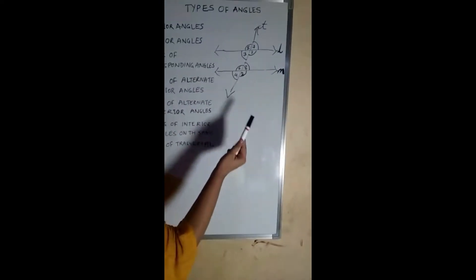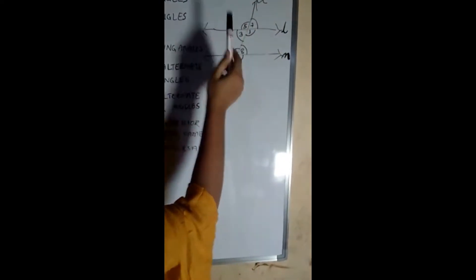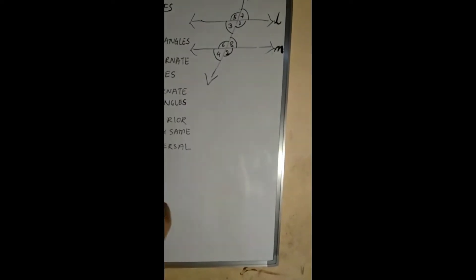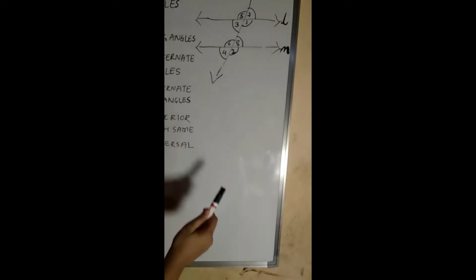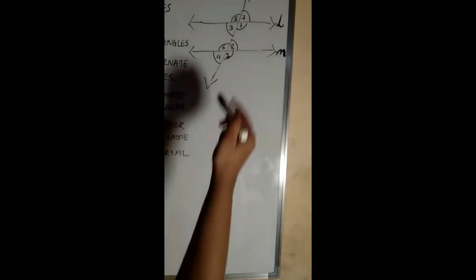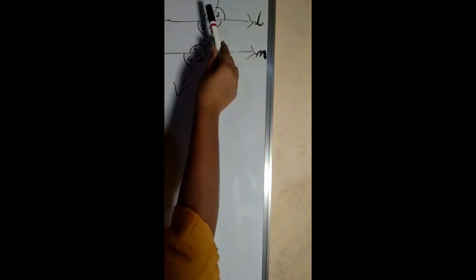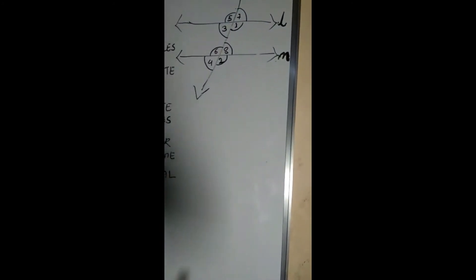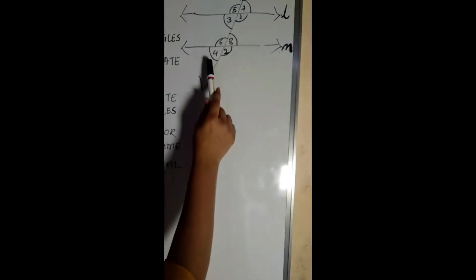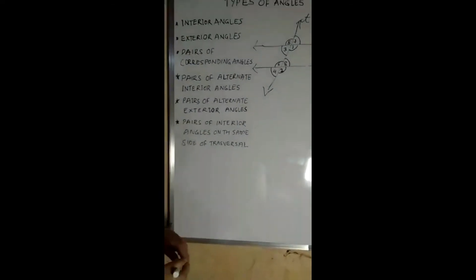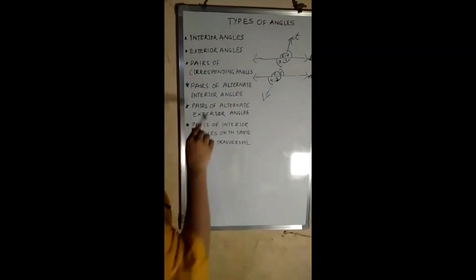Now let us study about corresponding angles. Corresponding angles means one interior angle and one exterior angle paired together. In this figure, 5 and 6 are corresponding angles, 7 and 8 are corresponding angles, 3 and 4 are corresponding angles, and 1 and 2 are corresponding angles.